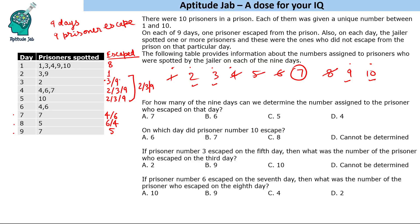So the only prisoner available to escape on day 6 is prisoner number 10, because after the 5th day, 4 prisoners have to escape: prisoners 4, 6, and 5 account for 3 of them. The 4th one has to be prisoner number 10. So prisoner 10 escaped on day 6.